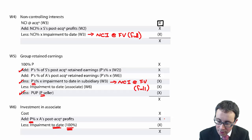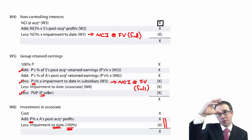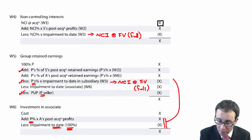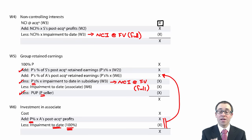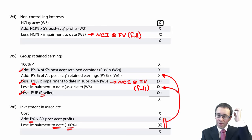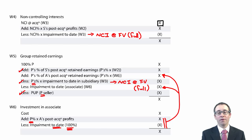This is just essentially double entry thinking. You've adjusted the top of the statement of financial position — your assets — by the share of post-acquisition profits and any impairment in working six. So if you've adjusted the assets, something else needs to be adjusted to make it balance. That's why in working five you also adjust for the same post-acquisition profits and impairments of the associate.